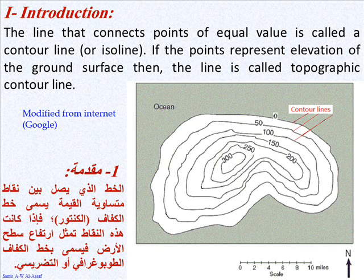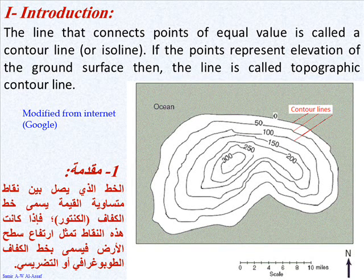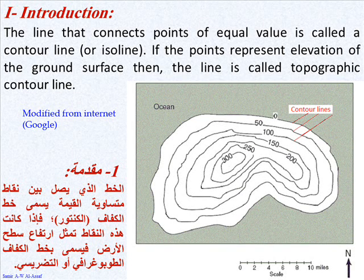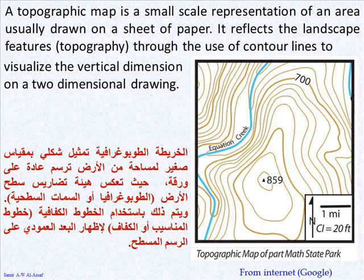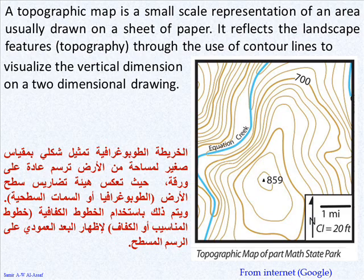Introduction. The line that connects points of equal value is called a contour line or isoline. If the points represent elevation of the ground surface, then the line is called a topographic contour line. A topographic map is a small-scale representation of an area usually drawn on a sheet of paper. It reflects the landscape features — that is to say, topography — through the use of contour lines to visualize the vertical dimension on a two-dimensional drawing.